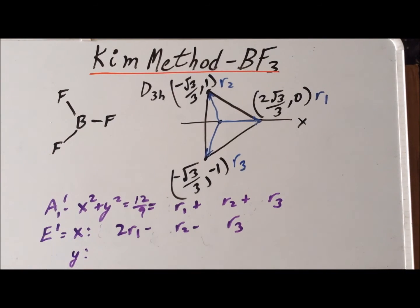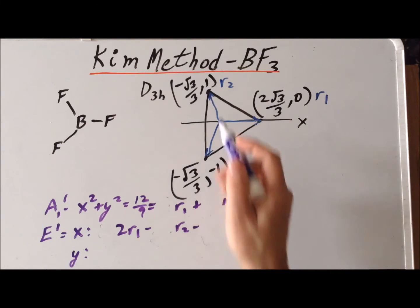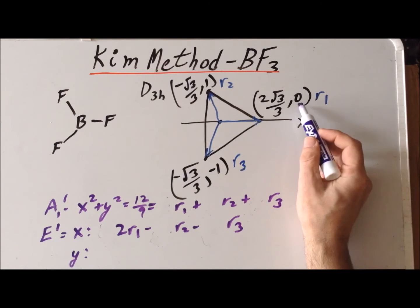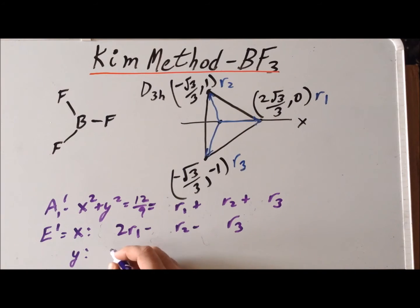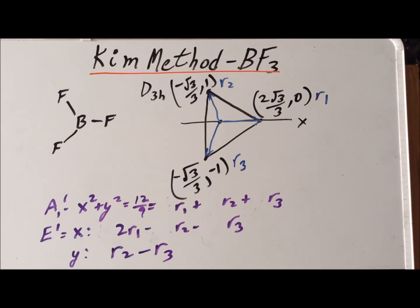We also have a basis function of y. Using the y-value at each point as the coefficient, the coefficient for R1 is simply 0, the coefficient for R2 is positive 1, and the coefficient for R3 is minus 1. So the second partner for E prime of stretching vibrations is R2 minus R3. This gives us all three of the stretching motions for boron trifluoride.